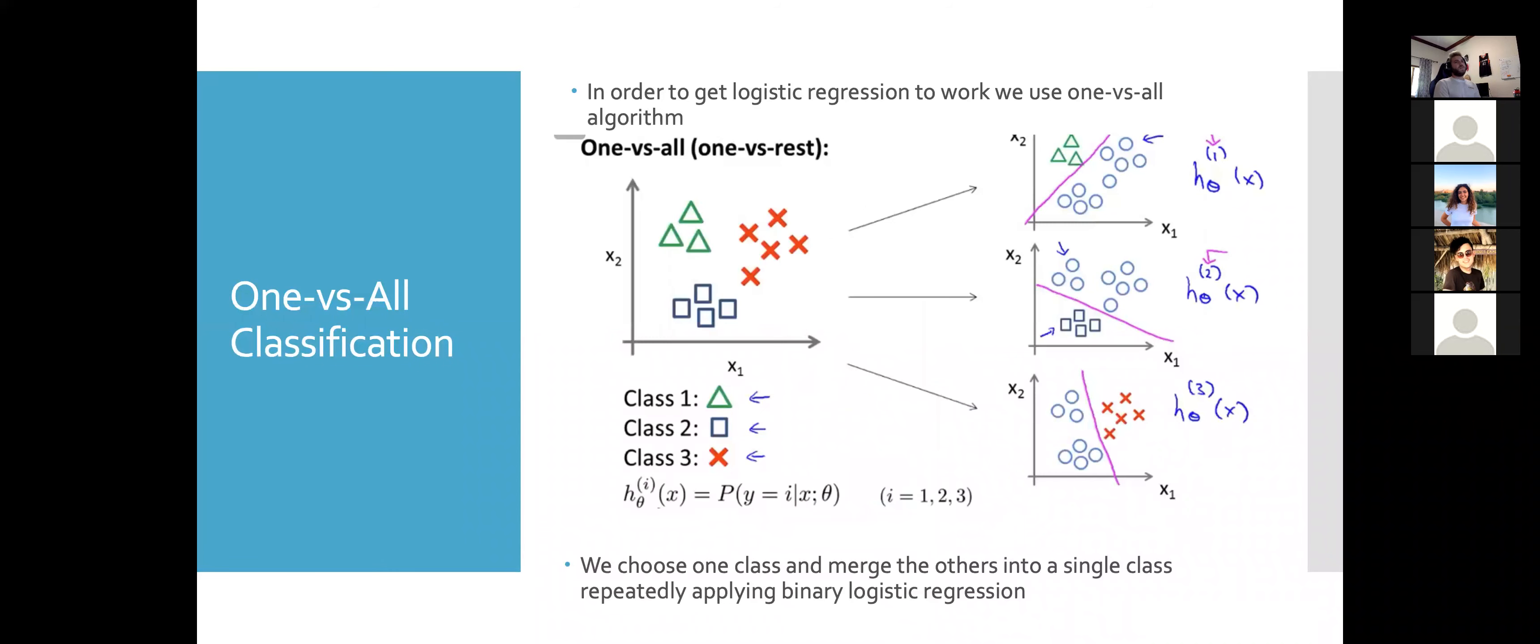In order to do this, we utilize what's called the one versus all algorithm, or it's also known as the one versus rest algorithm. With this, we can take one class, say the triangles maybe represent the classification of being sunny, and turn that into that versus the rest of them, that versus all of them. And then we do that for each class. We repeatedly choose one class and merge all the others into a separate class and essentially just apply binary logistic regression multiple times.